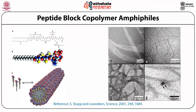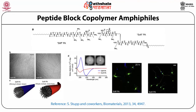Now we look at peptide block copolymer amphiphiles. This is an example from the group of Samuel Stupp, where a fatty acid is functionalized with different peptide blocks — a block with 16 units, followed by a flexible glycine unit block, then a block with a phosphate group, and then a charged group. This is called a peptide amphiphile because the amphiphile head group is a peptide. These form very nice fibers, as seen in cryo-TEM images showing nanometer-scale self-assembled nanofibers.